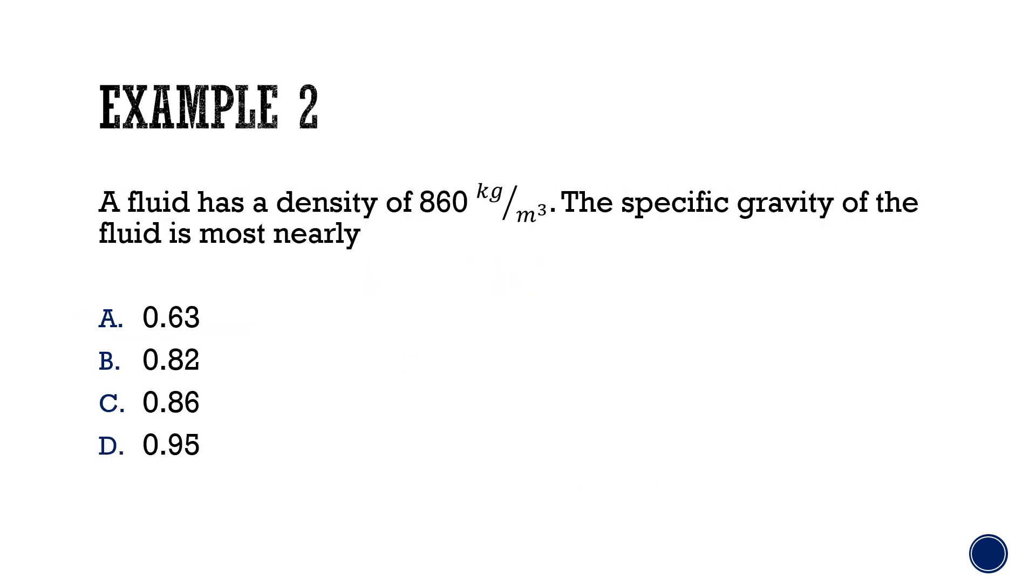For our second example, a fluid has a density of 860 kilograms per meters cubed. The specific gravity of the fluid is most nearly what? Pause the video if you would like to solve it on your own. We are asked to find the specific gravity of the fluid, so let's write out the formula. With us being given the density, we will use the formula that includes density, which is specific gravity equaling the density of the fluid divided by the density of water.